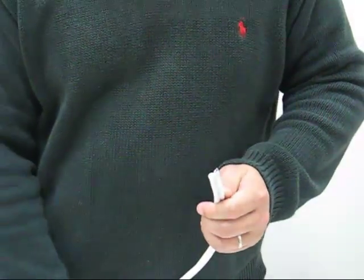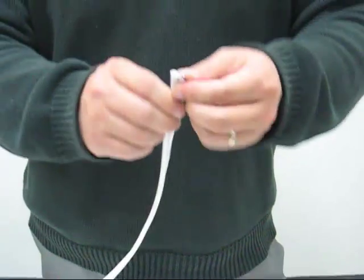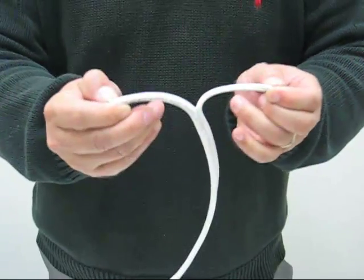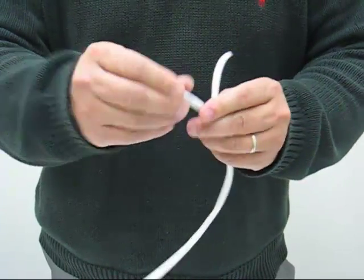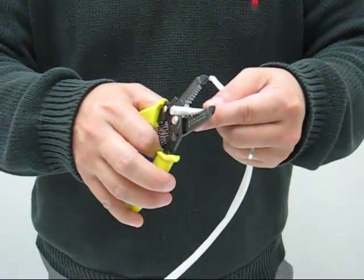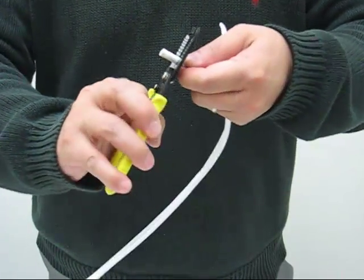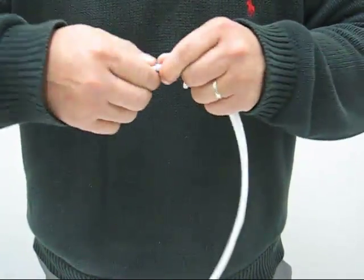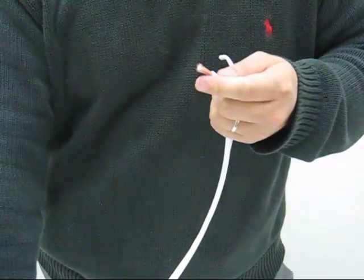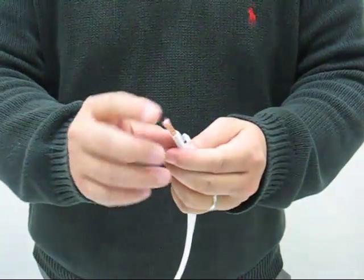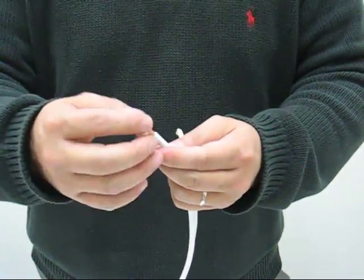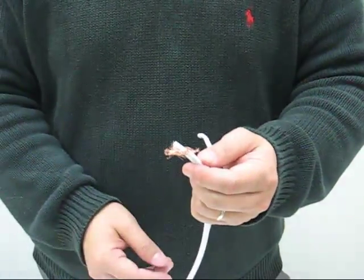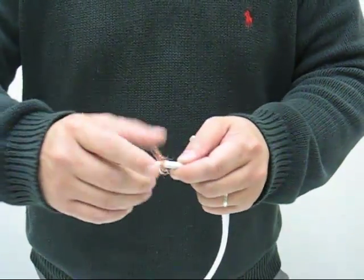To put the BNC connector on the cable, first we need to open the cable. Cut the PVC wrap about half an inch from the end. Unwrap the braiding, then twist them around the insulation.